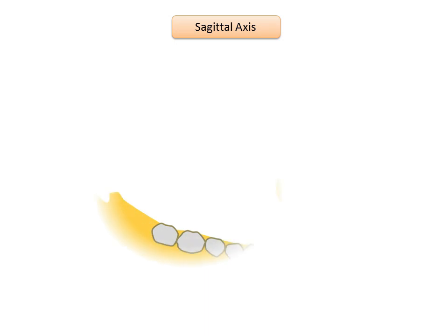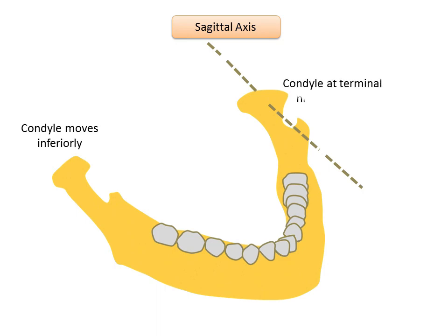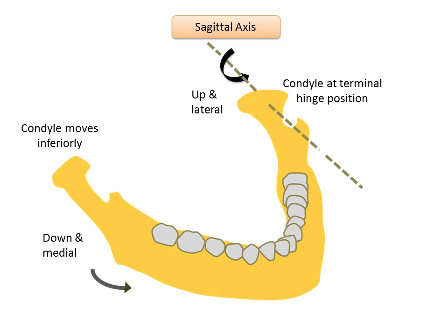The mandible shows slight rotation around the sagittal axis. Mandibular movement around the sagittal axis occurs when one condyle moves inferiorly while the other remains in the terminal hinge position. During this movement, the condyle on one side moves downward and medially along the slope of the entoglenoid process, which is the medial slope of the glenoid fossa, and the condyle of the opposite side moves upward and laterally.